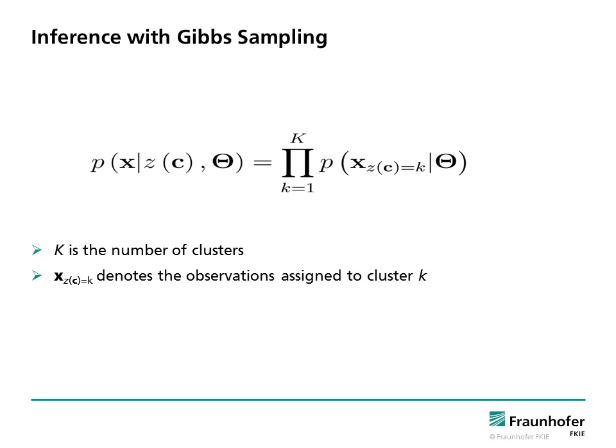We can decompose the likelihood term as shown in this equation. K is the number of clusters. Observations at each cluster are sampled independently from the same parameters. And these parameters are drawn from the base distribution G0.